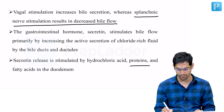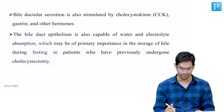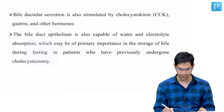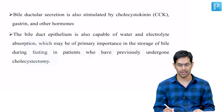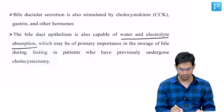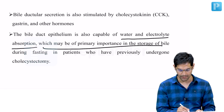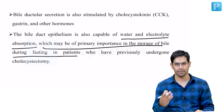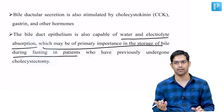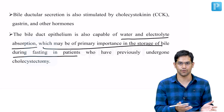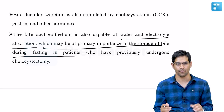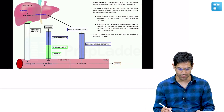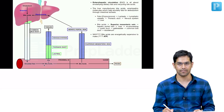Secretin release is stimulated by hydrochloric acid, proteins, and fatty acids in the duodenum (the chyme). Bile ductular secretion is also stimulated by cholecystokinin, gastrin, and other hormones. The bile duct epithelium is capable of water and electrolyte absorption, which is of prime importance in bile storage during fasting in patients who have undergone cholecystectomy — the biliary epithelium adapts by performing the absorption function previously done by the gallbladder.